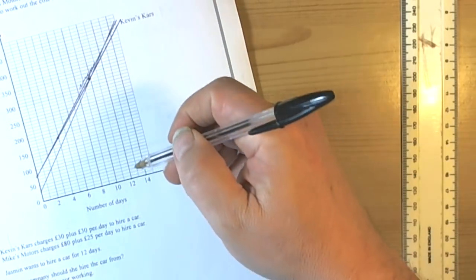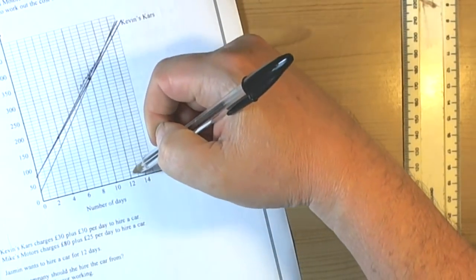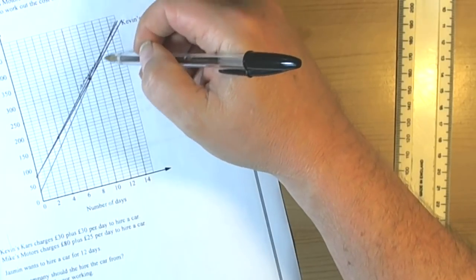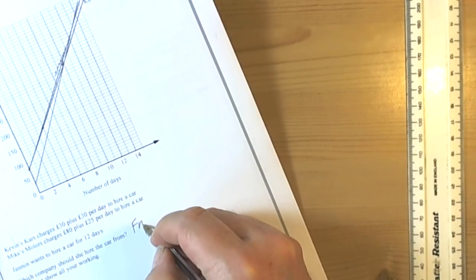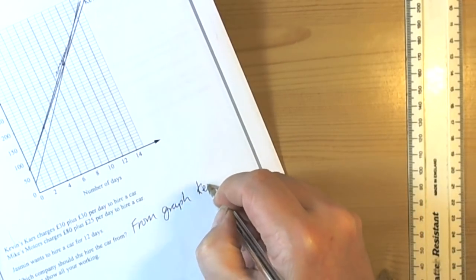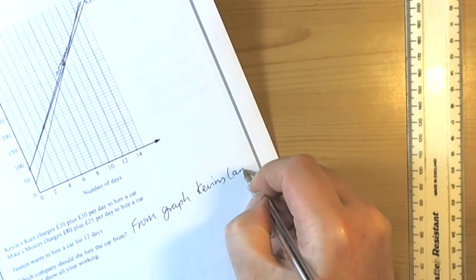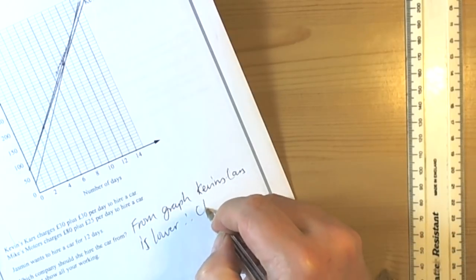Jasmine wants to hire a car for 12 days. Which company should she hire? Well, using the graph we can see that the cheapest would be Kevin's Cars. So from the graph, Kevin's Cars is lower, therefore cheaper.